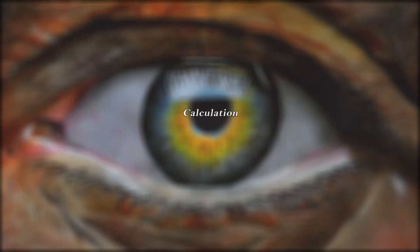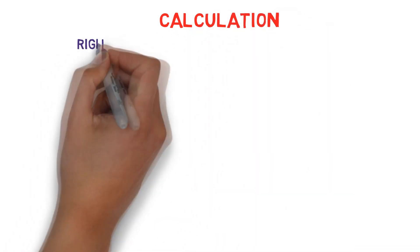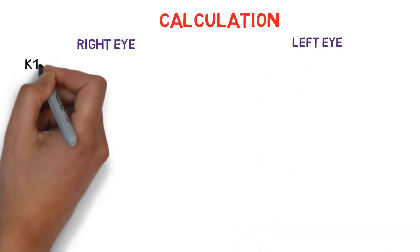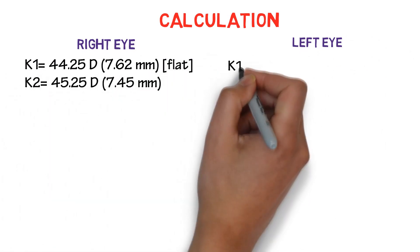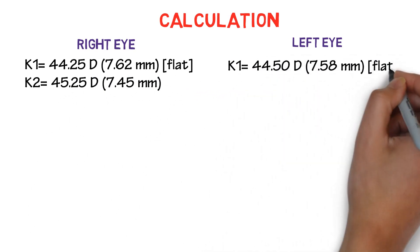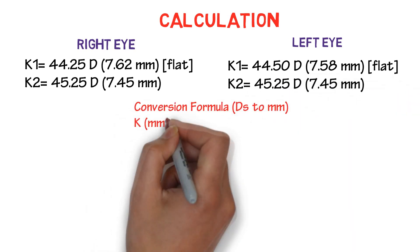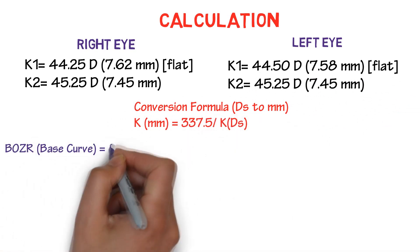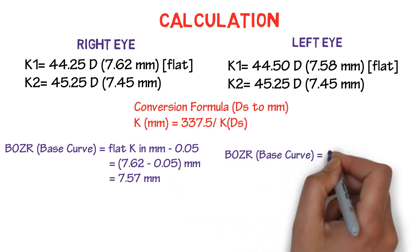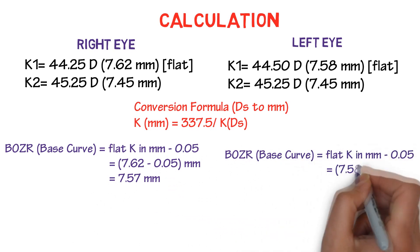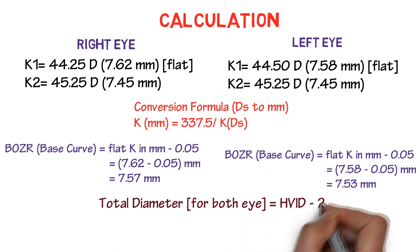We have to check the palpebral fissure height. After taking all the measurements, we have to calculate and derive the back optic zone radius and the total diameter value. These values will tell us which contact lens we should opt for the patient. To calculate the BOZR, we should take the flat K value and subtract 0.05 from it. For the right eye we got the BOZR as 7.57 mm. To calculate the total diameter, we should subtract 2 mm from the HVID value. Here we got the HVID value as 8.